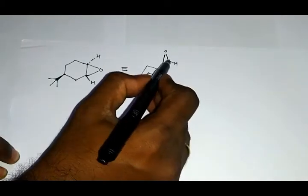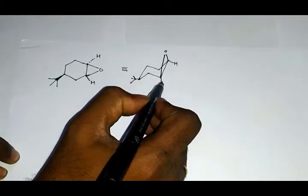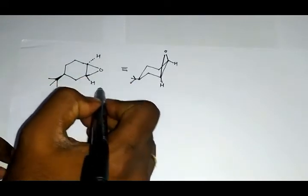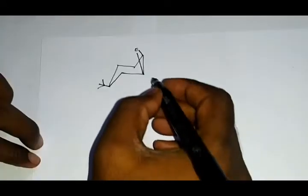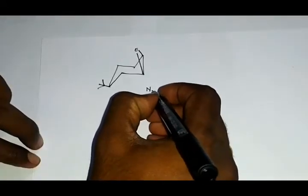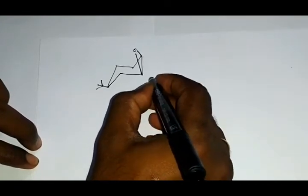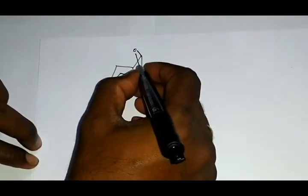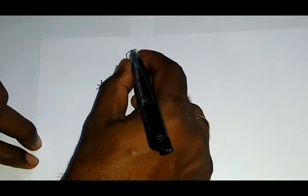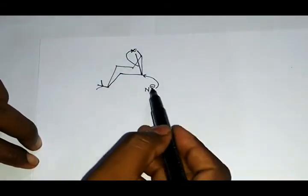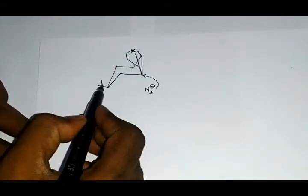So the azide ion will attack this carbon; this bond will fall onto the oxygen. We have to note that since this is a very bulky group, the azide ion will attack from the opposite side.